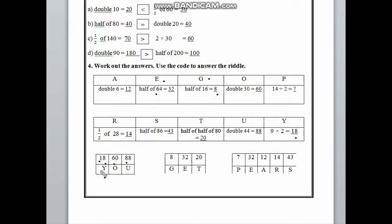The code of 18 is Y. So in this blank box below 18, we have to write Y. Here is 60, and the code of 60 is O. Below 60, we have to write O. Here is 88.